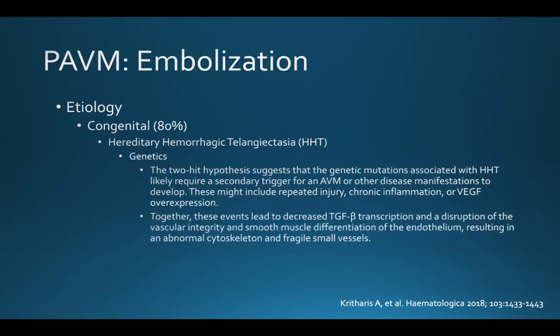There is a two-hit hypothesis, which suggests that the genetic mutations associated with HHT likely require a secondary trigger for an AVM or other disease manifestation to develop. In the case of HHT, these might include repeated injury, chronic inflammation, or VEGF overexpression. Together, all of these events lead to decreased TGF-beta transcription and a disruption of vascular integrity and smooth muscle differentiation of the endothelium, resulting in an abnormal cytoskeleton and fragile small vessels.